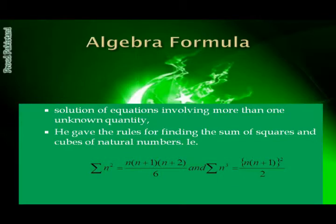Algebra formulas: He found many algebra formulas. In algebra, he made considerable work in the solutions of equations involving more than one unknown quantity. He gave the rules for finding the sum of squares and cubes of natural numbers: summation of n² = n(n+1)(n+2)/6 and summation of n³ = [n(n+1)/2]².